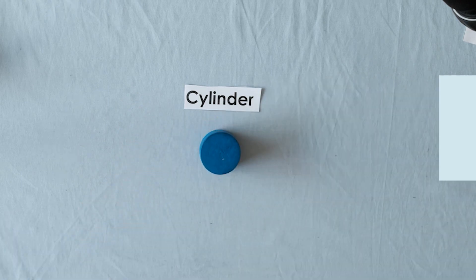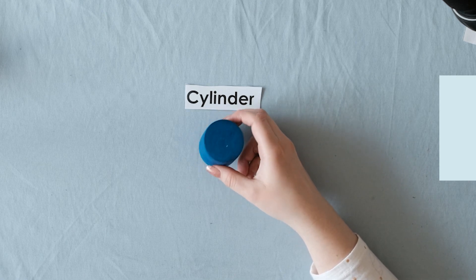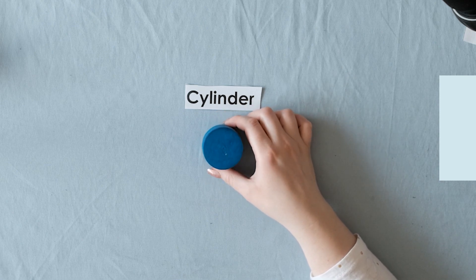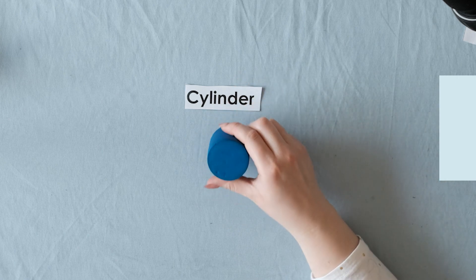A can that has beans in it, for example, or a can that you drink pop out of. It kind of looks like a water bottle, maybe. A lot of things come in this round shape, a cylinder shape.